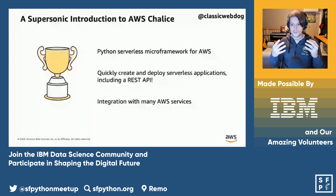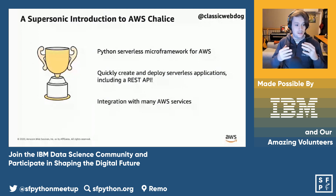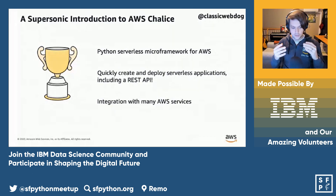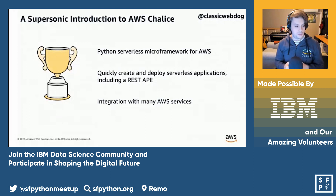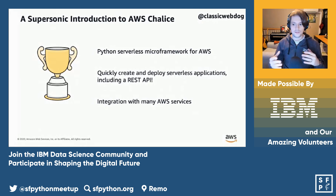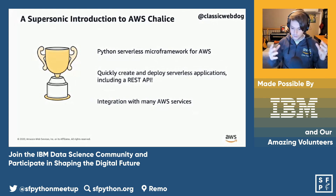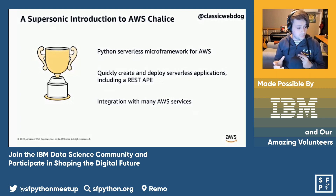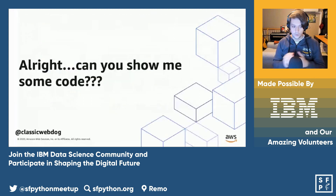So we understand what REST APIs are and what open data sets are — now what's Chalice? Chalice is a serverless micro-framework for AWS to specifically deploy and maintain certain types of serverless applications, including REST APIs. For the simplicity of this talk, we're going to focus on specifically deploying REST APIs. If you've ever used Flask, it looks and deploys very similarly to that and integrates all over the place.